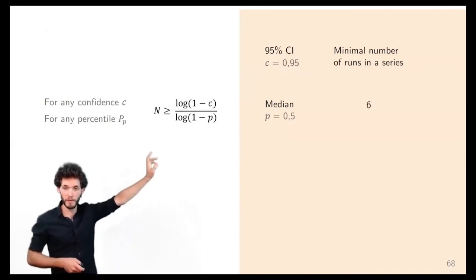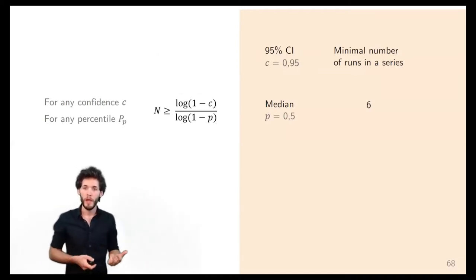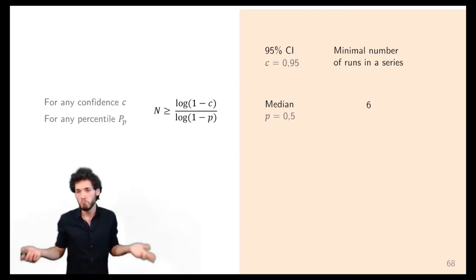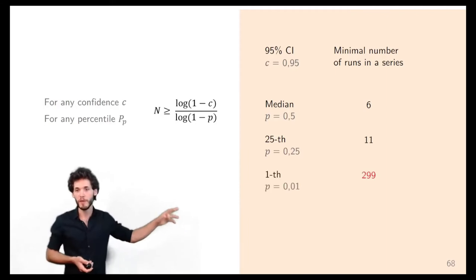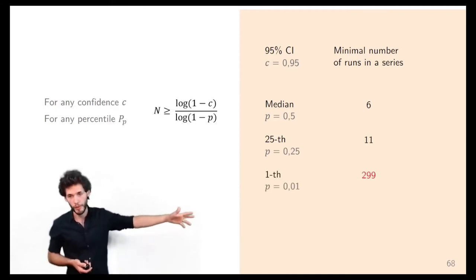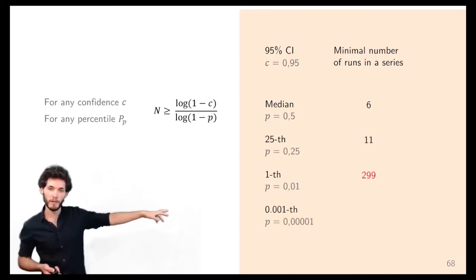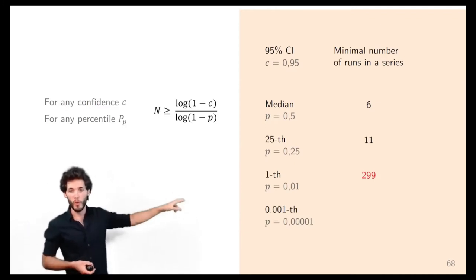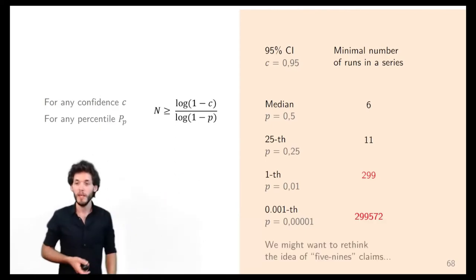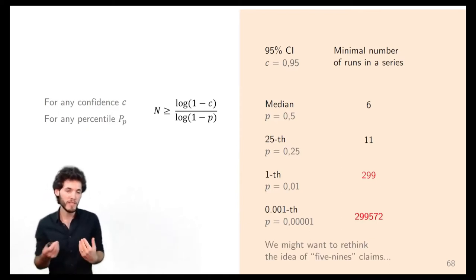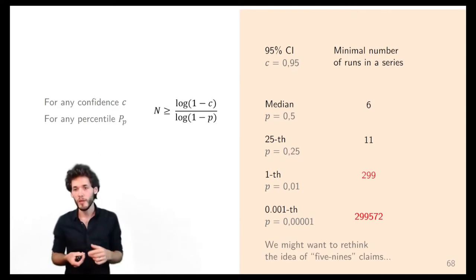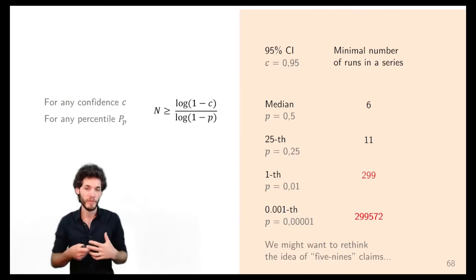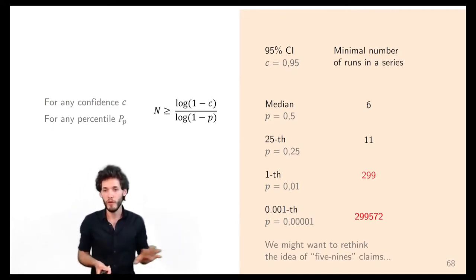Putting that into numbers with a confidence level c = 0.95: for the median, you need a minimum of 6 samples — fairly small. As percentiles get more extreme, you naturally need more samples. For the first quartile you need 11 samples; for the first percentile, almost 300 samples. For the five-nines reliability — estimating at the 0.00001 level — it goes up to 300,000 tests. This means that to make a meaningful estimate at five-nines reliability with 95% confidence, you need at least 300,000 tests. I'd bet that very few people have ever done that.